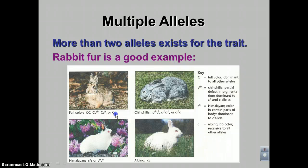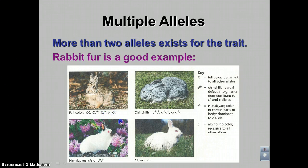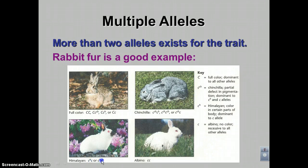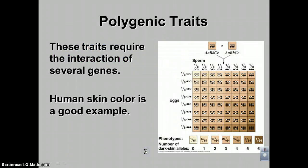There are four different allele combinations that will make you a brown rabbit, and you have to have at least one big C. The brown is dominant over chinchilla, Himalayan, and albino. For chinchilla, there are three different combinations, and you need at least one C superscript H. For the Himalayan, there are only two choices — you have to have two C superscript H, or one allele is albino. And the only way to be albino is to have two little Cs. So that's an example of multiple alleles.